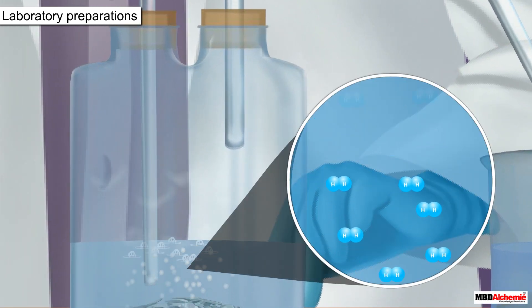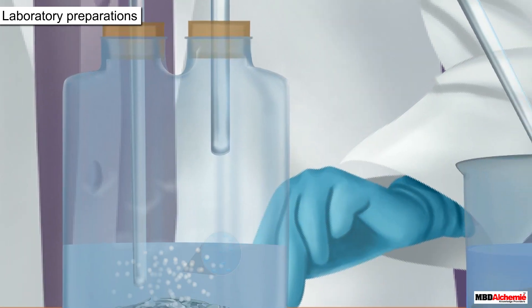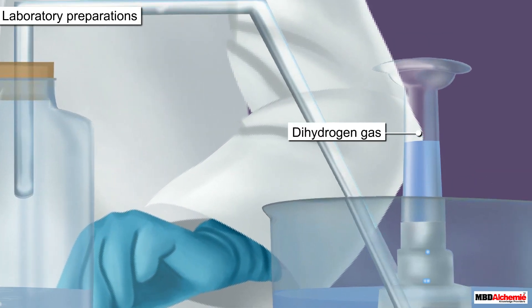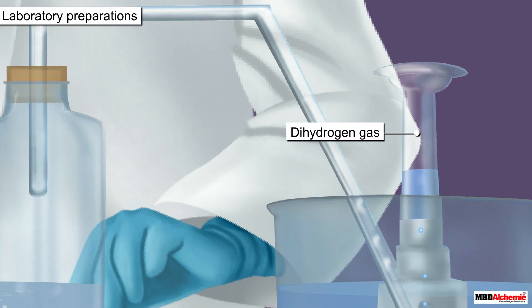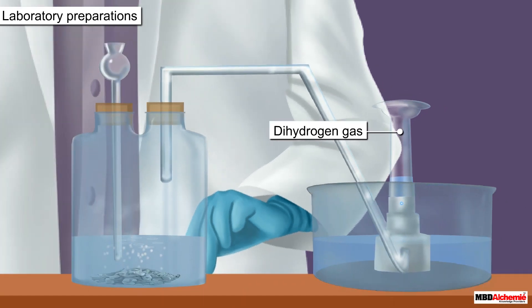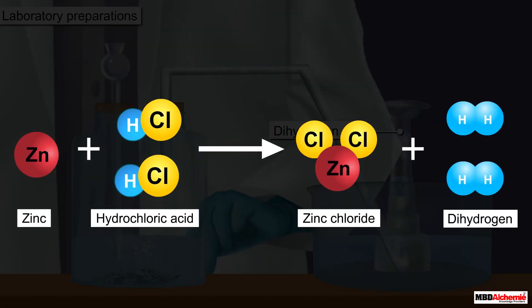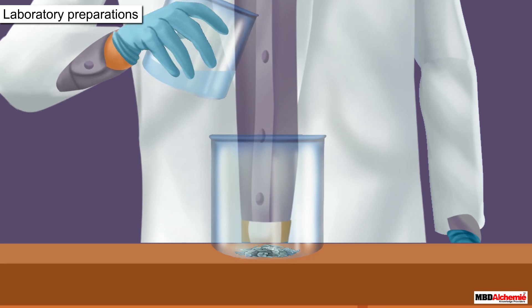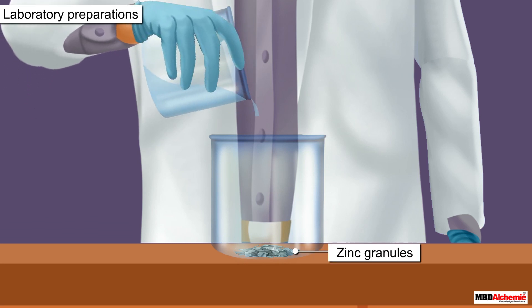Zinc in the bottle then reacts with the acid and forms dihydrogen. The dihydrogen gas so formed enters the delivery tube and gets collected in the gas jar through the downward displacement of water. The chemical equation for this reaction between zinc and acid is shown here.